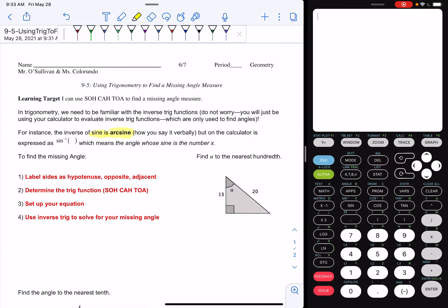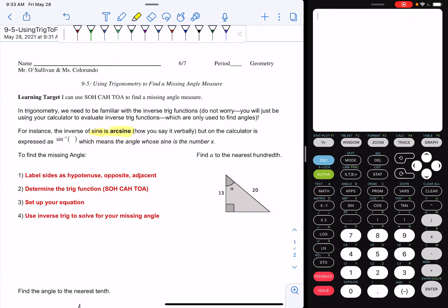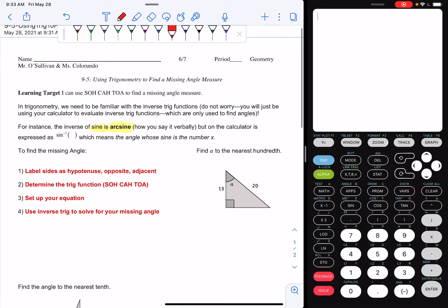What that means is the angle whose sine is the number x. So to find your missing angle, if you're using Desmos, you're going to be actually writing out arcsine like that. To find the missing angle, the first thing you're going to do is label your hypotenuse, opposite, and adjacent. So let's actually go through this procedure as we do this problem right here.